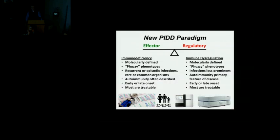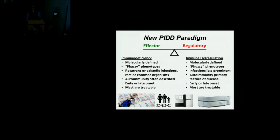We now know from sequencing a fair number of these patients that the old adage taught by medical school professors — find the one unifying diagnosis — may not always be possible. About five percent of patients have two genetic diagnoses — two genetic defects that both cause primary immunodeficiency — and their clinical phenotype is some blending of those two defects. That has created additional diagnostic fuzziness.